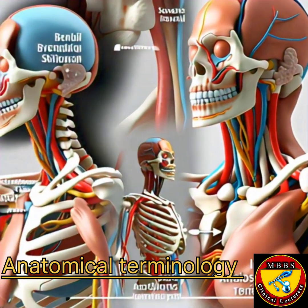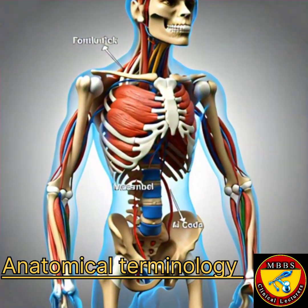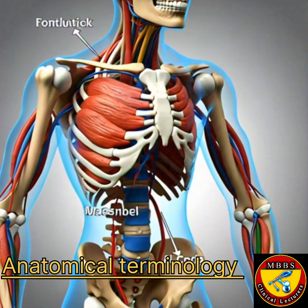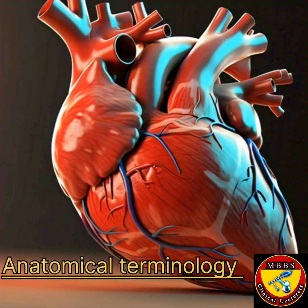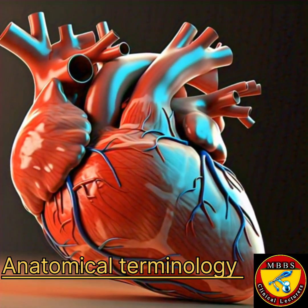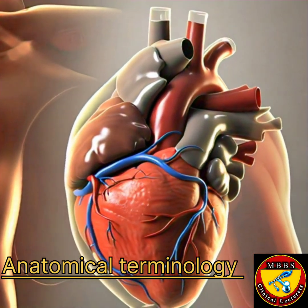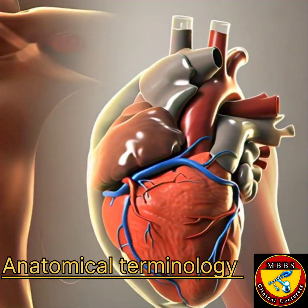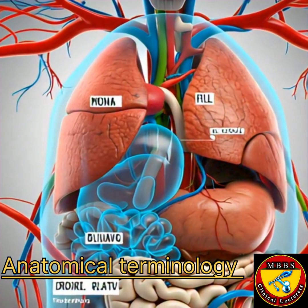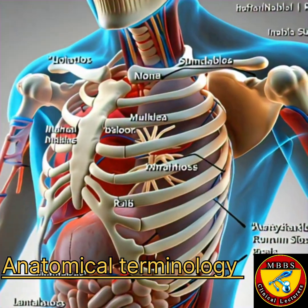Other key terms. 1. Anterior – Towards the front of the body. 2. Posterior – Towards the back of the body. 3. Superior – Towards the top of the body. 4. Inferior – Towards the bottom of the body. 5. Medial – Towards the midline of the body.